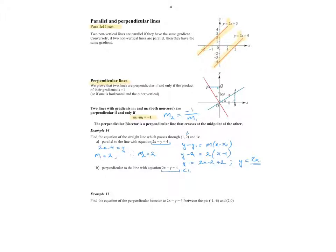For the line that's perpendicular, I've already got the gradient of that line, M1 equal to 2. So then if it's a perpendicular line, M2 has to equal negative 1 over 2. So the gradient of my perpendicular line is negative 1 half.